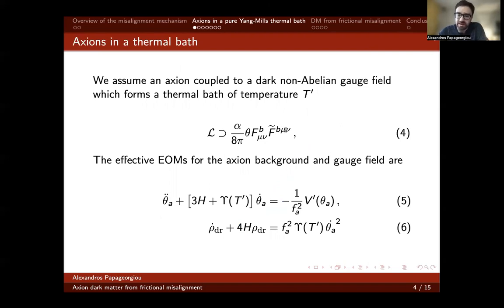We're aiming to modify the standard picture by assuming the coupling of the axion to some dark non-Abelian gauge field that forms a thermal bath of temperature T prime at early times. The idea is that strong sphaleron transitions in this hot thermal environment behave approximately as thermal perturbations of the topological charge and ultimately drain the kinetic energy of the axion. The overall effect can be captured by the inclusion of this additional term, which takes the form of a friction with a friction coefficient capital Υ, which is a function of the temperature of the dark thermal bath.